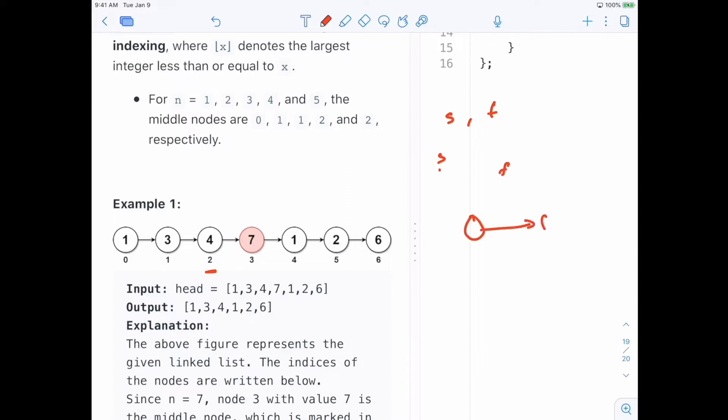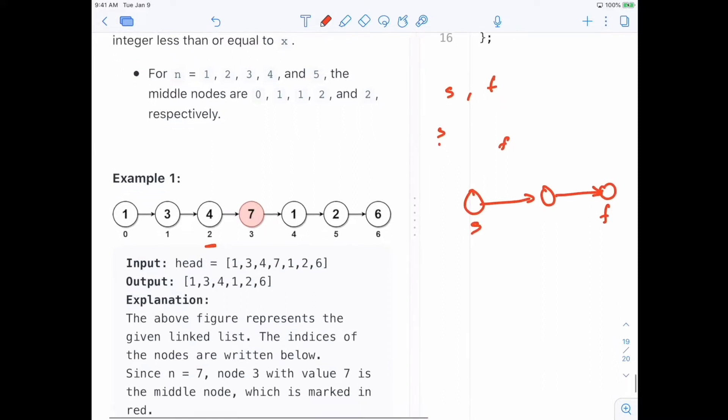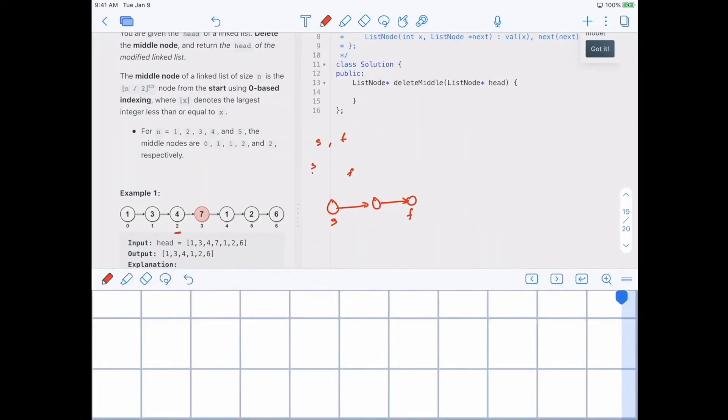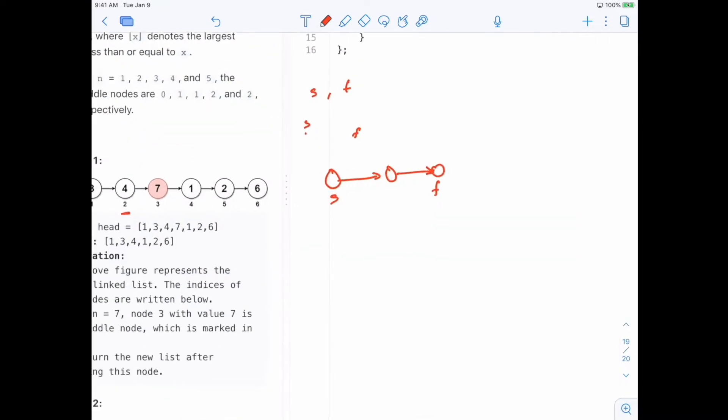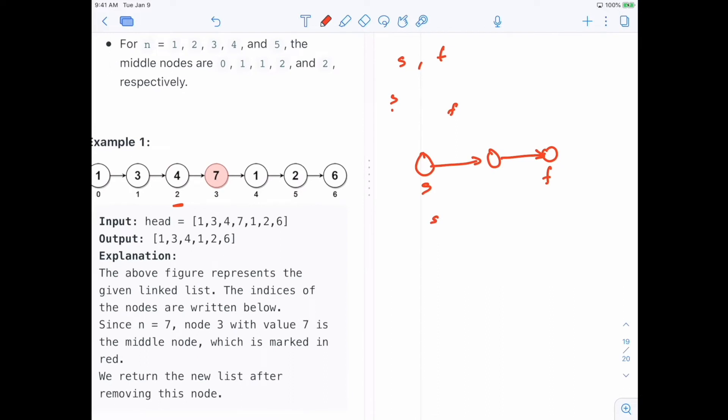So basically you would have one node here, one node here. Slow needs to be here, fast needs to be here, and you advance slow and fast in a way that you always maintain this distance. And so basically slow dot next, slow each time will become slow dot next, and fast will become fast dot next dot next.